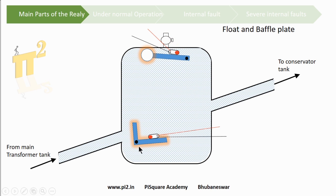Here is a float and a baffle plate. There are two mercury switches - one connected to the alarm circuit and another to the trip circuit. These mercury switches play a key role in activating the alarm as well as the trip circuits.